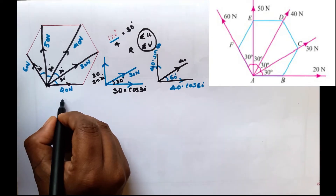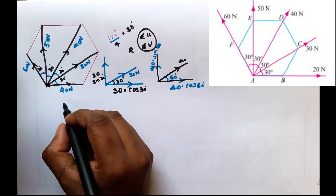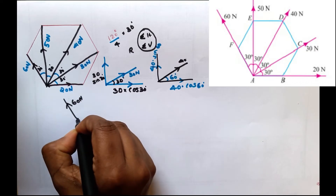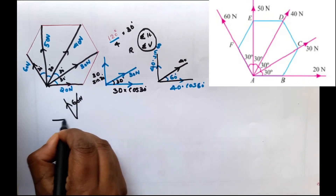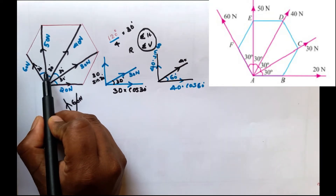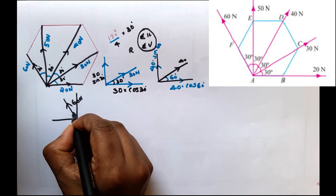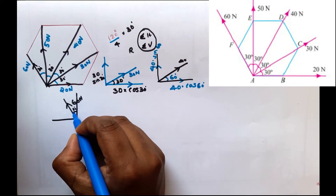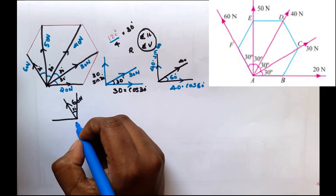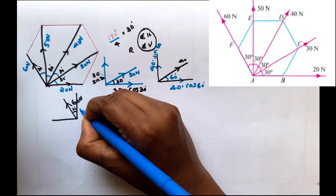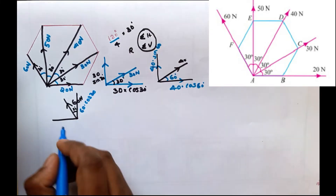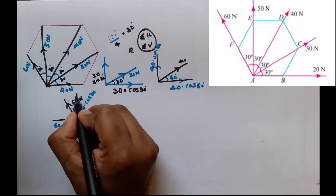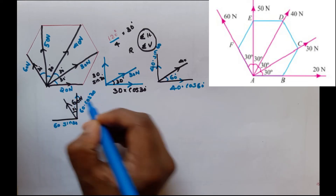For the 60N force, we identify the angle. The angle with the horizontal is 30 degrees. So the horizontal component is 60 cos 30 and the vertical component is 60 sin 30. We also note the direction of this force.